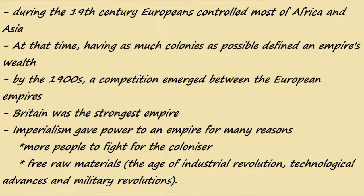During the 19th century, Europeans controlled most of Africa and Asia. By the 1900s, a competition emerged between the European empires. Take the German Empire as an example — it was a newborn empire that came to life after the unification of Germany. When the German Empire emerged, the Germans didn't find a way to become powerful because almost all countries of the world were already colonized by Britain, France, or Russia. They didn't find a place to colonize, so competition emerged between the empires — and competition means tensions.